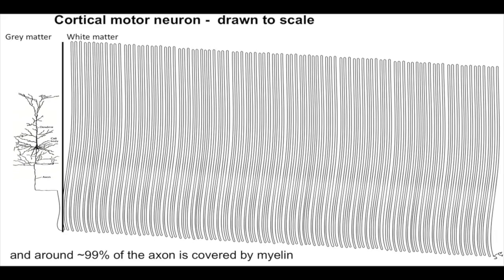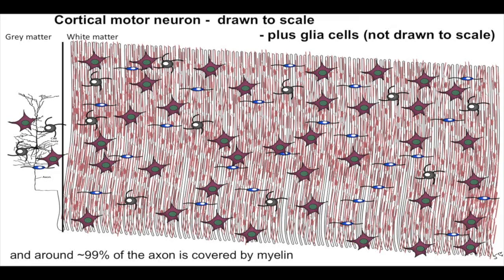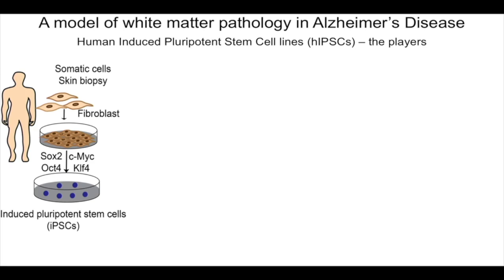To model gray and white matter, in gray matter we have cortical neurons that extend axons through white matter, where the axon is covered by myelin from oligodendrocytes — about 99% of a cortical neuron's axon is myelinated. You also have astrocytes and microglia in both gray and white matter. So to generate a valid model, you need to generate all these cell types.